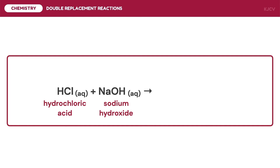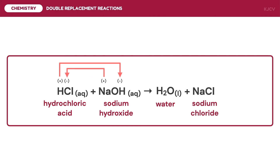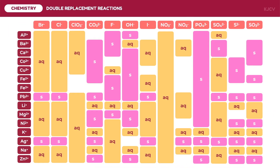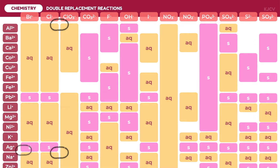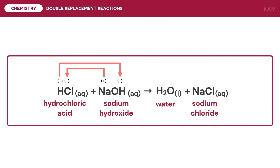For the acid, hydrogen is the positive ion and chloride is the negative ion. For the base, sodium is the positive ion and hydroxide is the negative ion. Hydrogen will bond with the hydroxide ion to form water. Sodium will bond with the chloride ion to form sodium chloride. Since sodium and chloride ions are involved, the compound is aqueous. Therefore, the complete reaction is: one mole of hydrochloric acid reacts with one mole of sodium hydroxide to form one mole of water and one mole of aqueous sodium chloride.